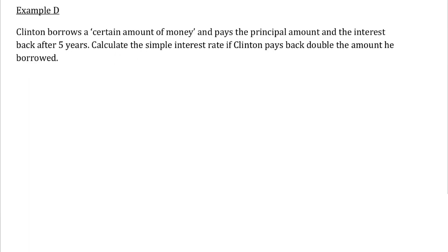Example D: Clinton borrows a certain amount of money — we don't know how much. Borrowing happens at the beginning of the loan, so that's a P value, whatever it is. He pays back this principal amount and the interest after five years — so five years is the time period. Calculate the simple interest rate. He has paid back double that original amount, and the thing you pay back is your A value.